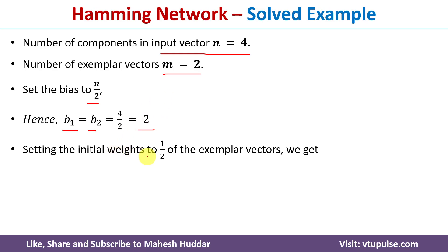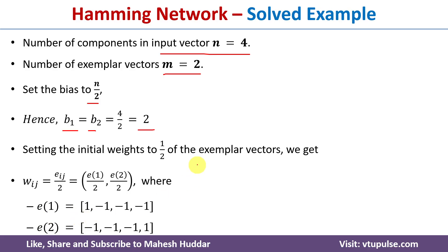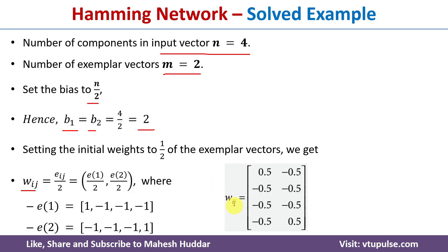Next, we calculate the initial weights. The initial weights are always equal to half of the exemplar vectors. So W_ij = E_ij / 2. We set up the weight matrix with two columns — one for E1 and one for E2. So W11, W12, W21, W22, W31, W32, W41, W42 are calculated. This first column corresponds to the first exemplar vector, and this second column to the second exemplar vector.